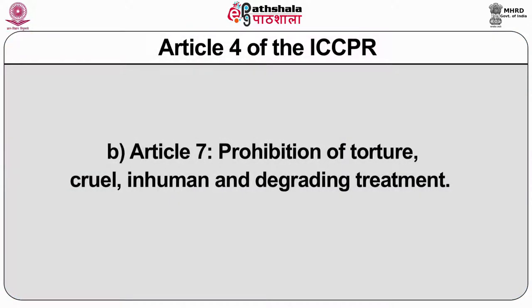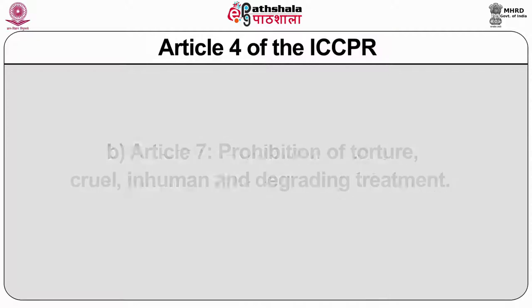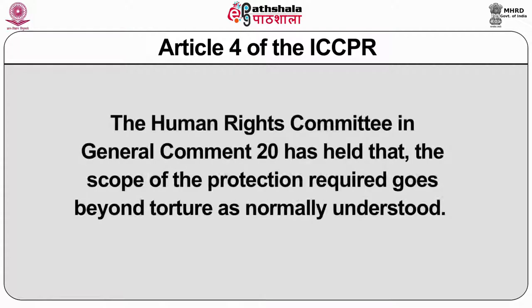Article 7: Prohibition of Torture, Cruel, Inhuman and Degrading Treatment. The Human Rights Committee in General Comment 20 has held that the scope of the protection required goes beyond torture as normally understood.